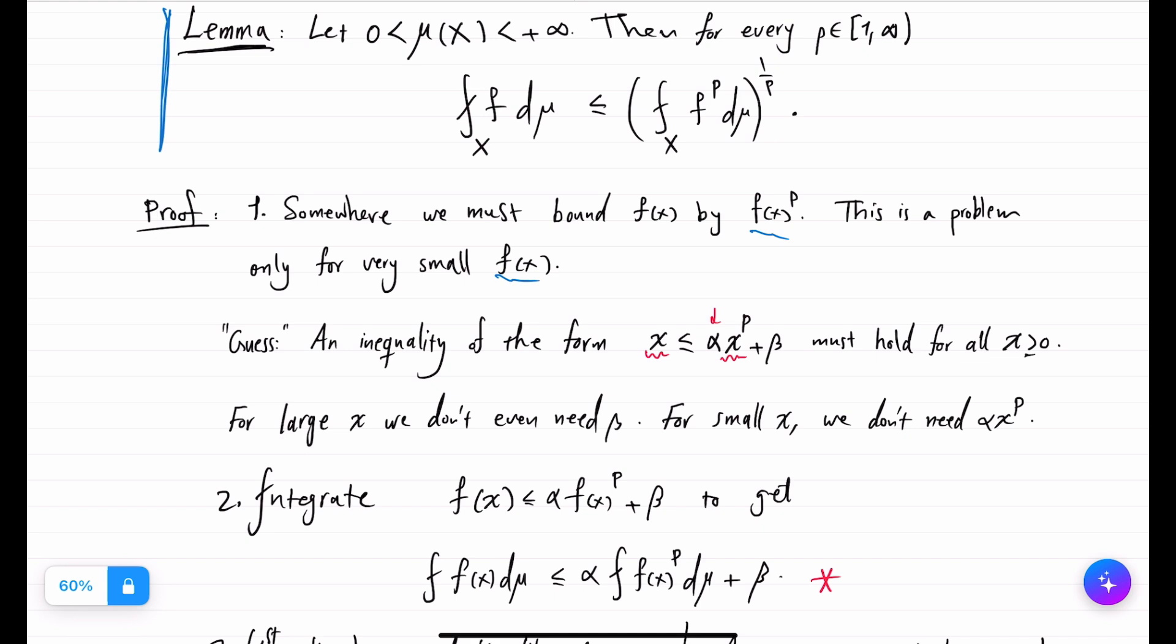But so without β this would fail only for a very small x. So when x is small we add a constant β to compensate. Now this kind of an inequality is easy to believe to hold for all x positive. For large x we don't need β because this will be much larger than x itself.